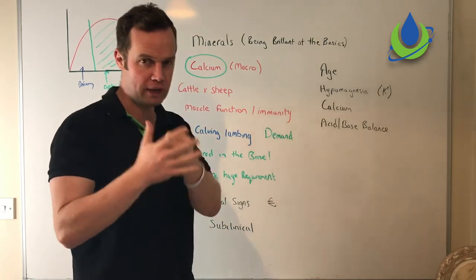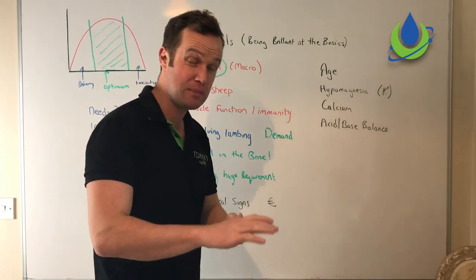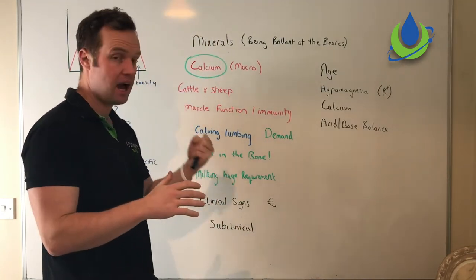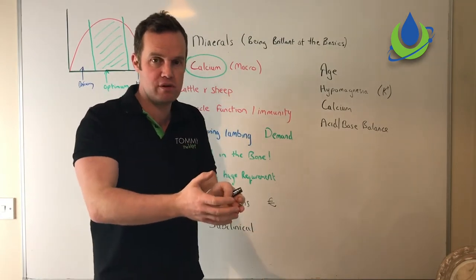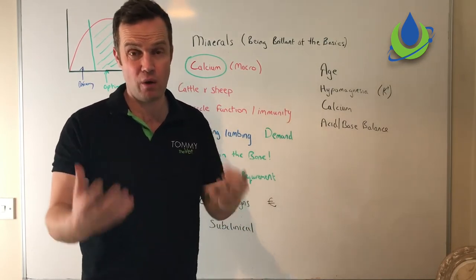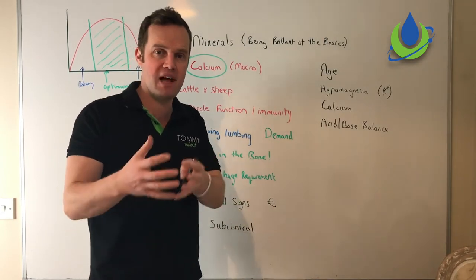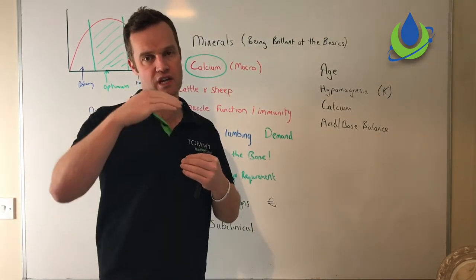Just quickly on sheep: it's pre-lambing that the issue is with calcium, and we see sheep going down with low calcium. In cows, it's all around calving time, particularly as she's brewing colostrum. Then when you think about milk itself being produced and how high that is in calcium, there's a massive demand at calving time until the cow adjusts where she can actually intake calcium from her diet.